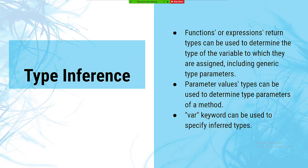Type inference is super important because new language features involve types whose names are so long we can never type them — they're dynamic and even anonymous. We have to let the compiler determine those types and trust it to do the type checks where we don't have to declare them explicitly.